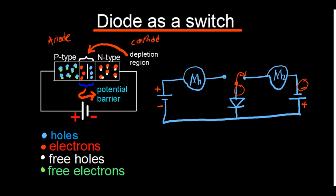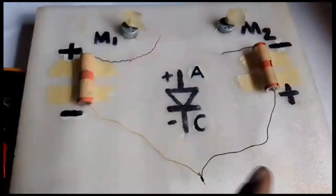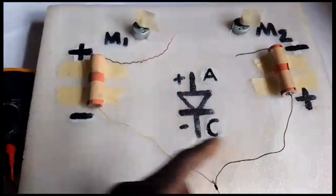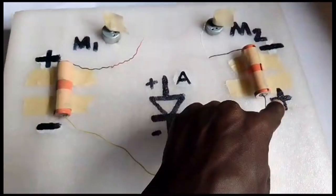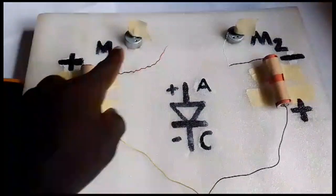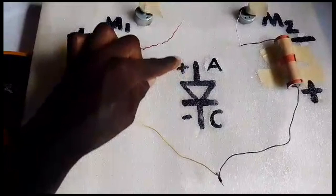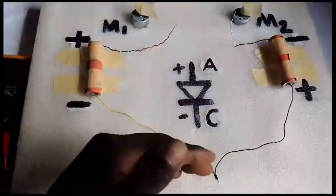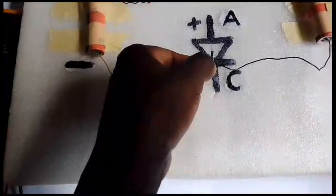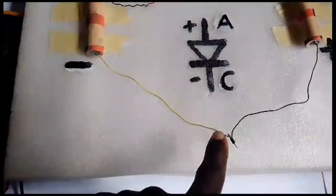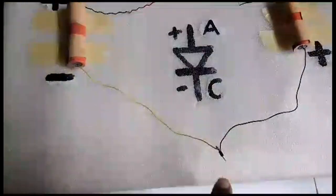Now let's look at the demonstration. I have two cells here. The terminals are arranged as follows: positive here and negative here for the first cell, and positive here and negative there for the second cell. I have Motor 1 and Motor 2. The diode is positioned with the anode indicated as A on one side and the cathode as C on the other. I've tied it up on the cathode side and left the anode end free.